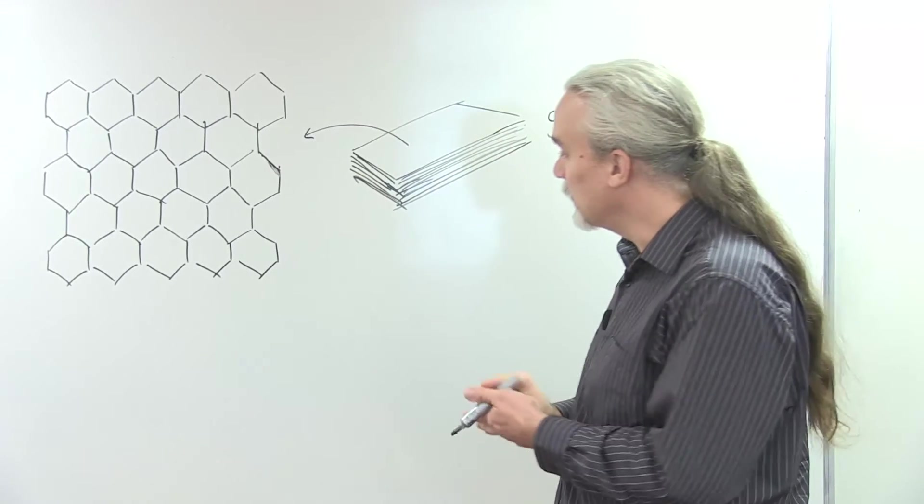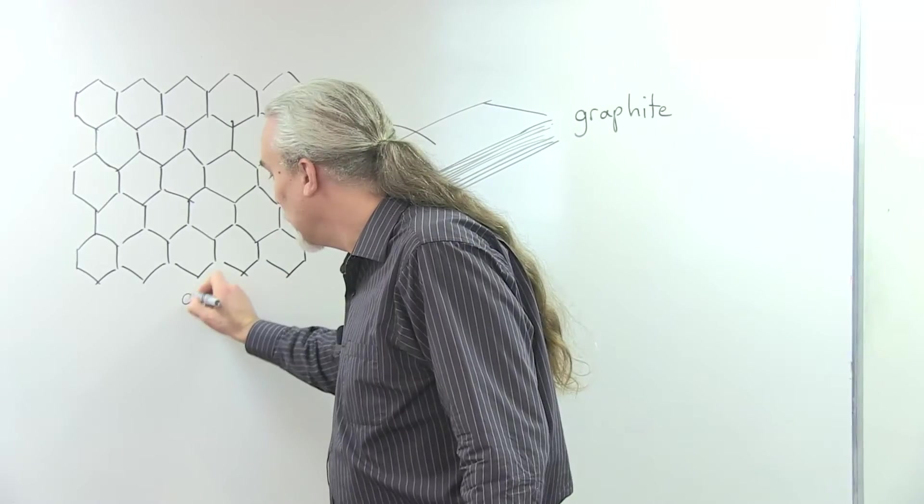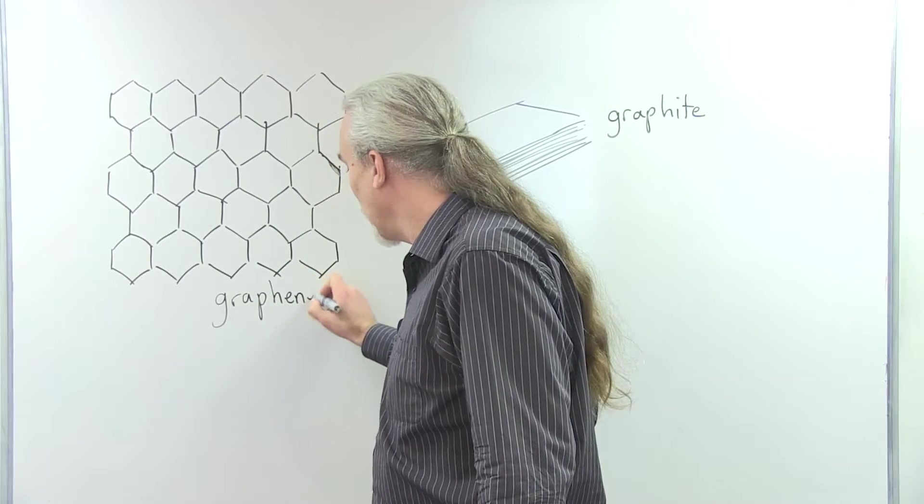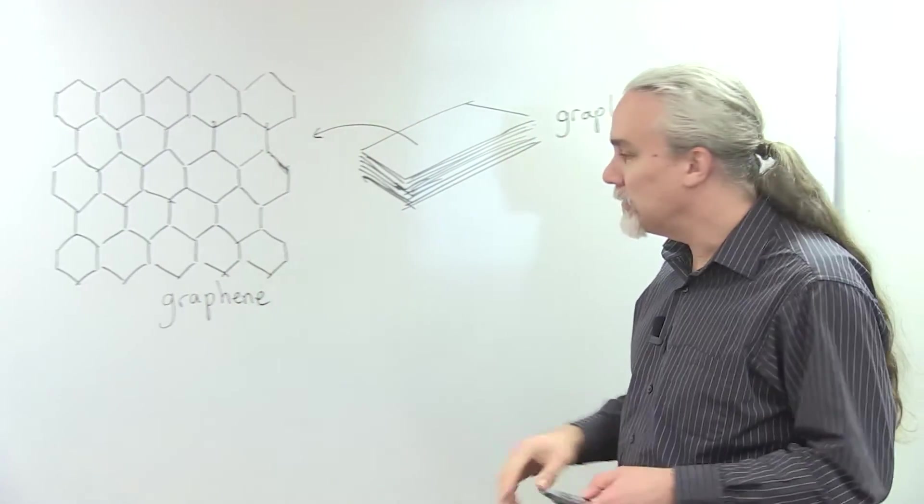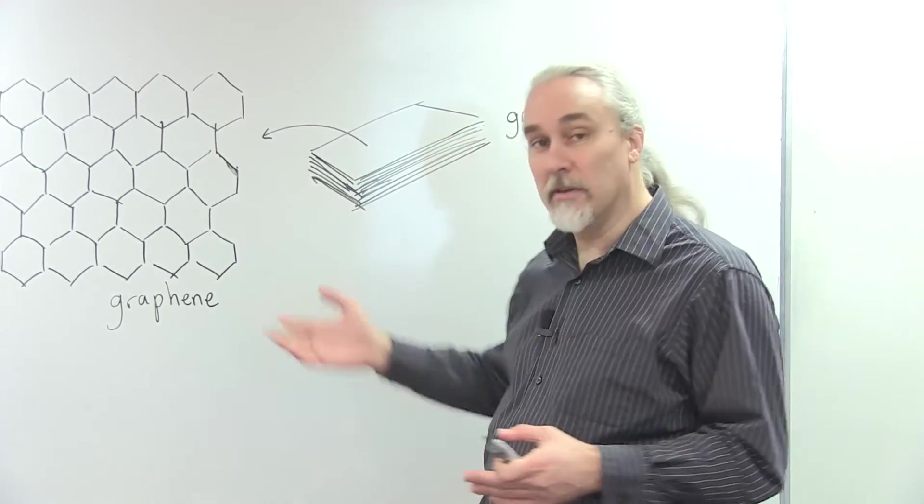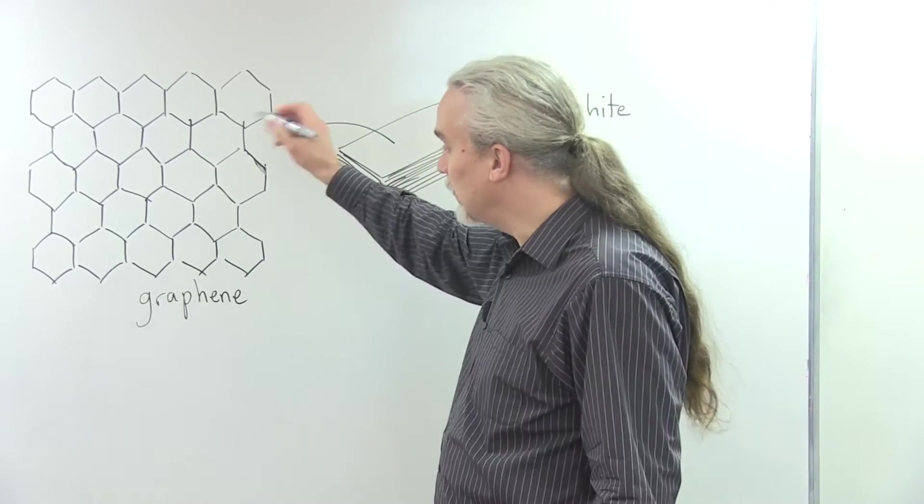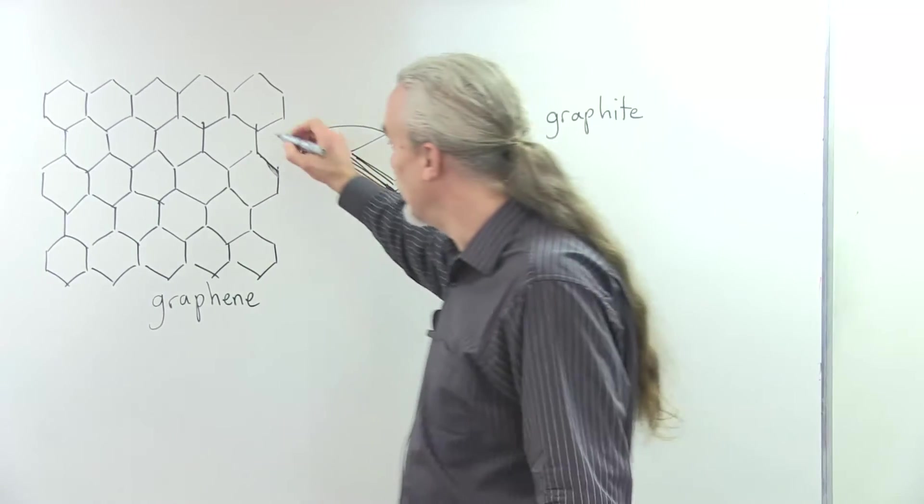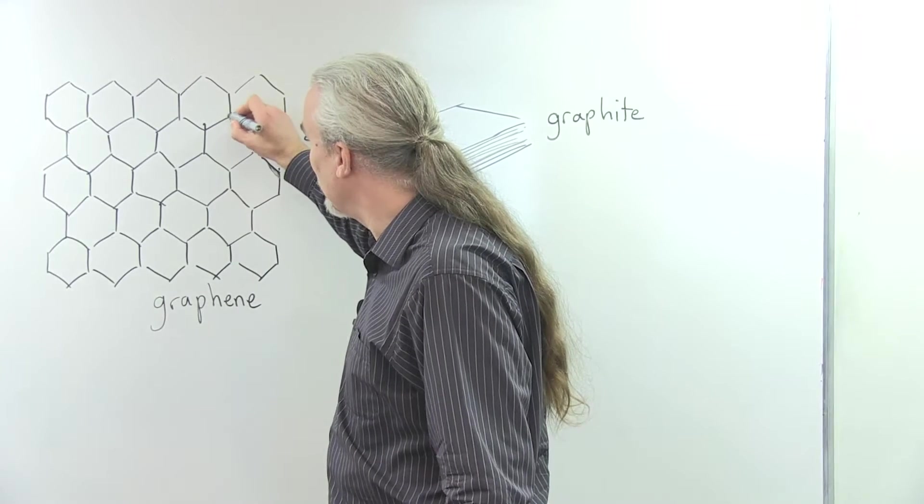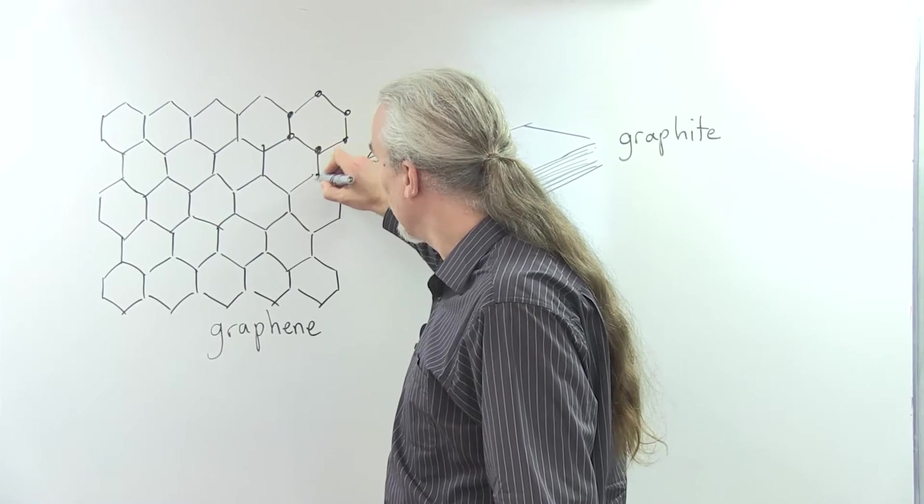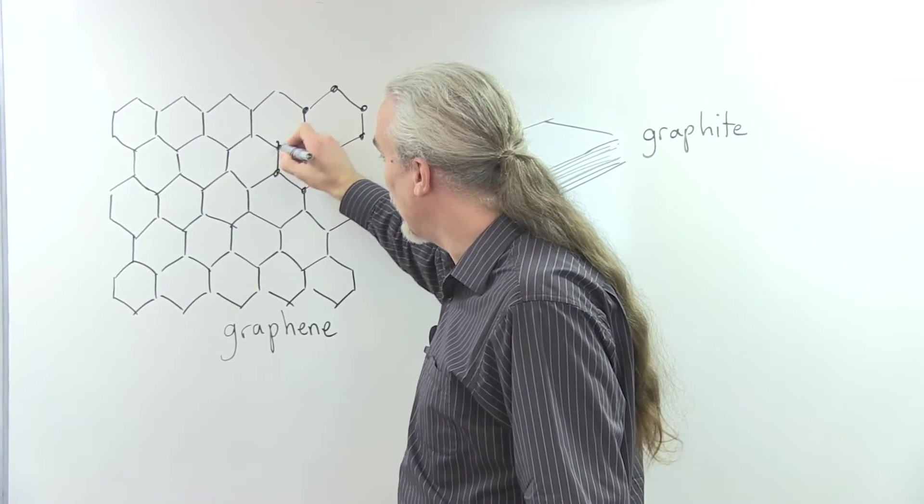And the layers of that material, just one layer of that material, is what we call graphene. And graphene looks like this. You can imagine that the atoms in graphite and graphene are made of carbon, and the carbon atoms are arranged in a network that looks like chicken wire. It's all hexagons, so the atoms would be at the intersections of these lines, and the lines would represent the bonds between the atoms.